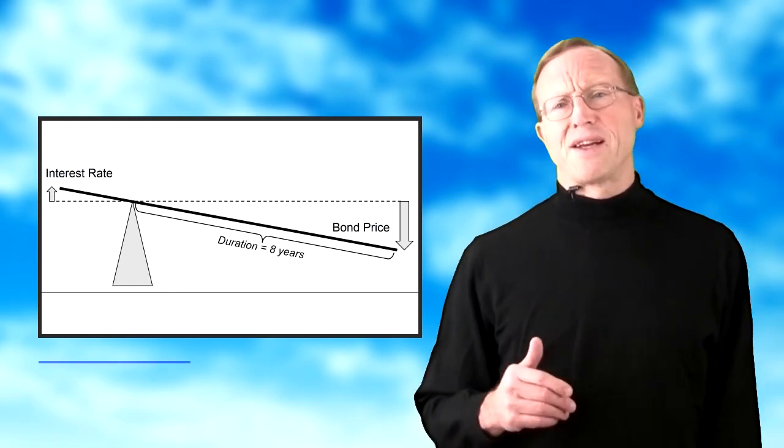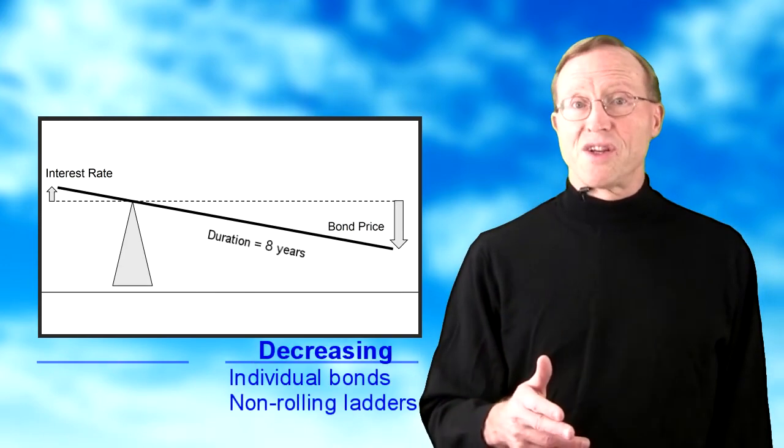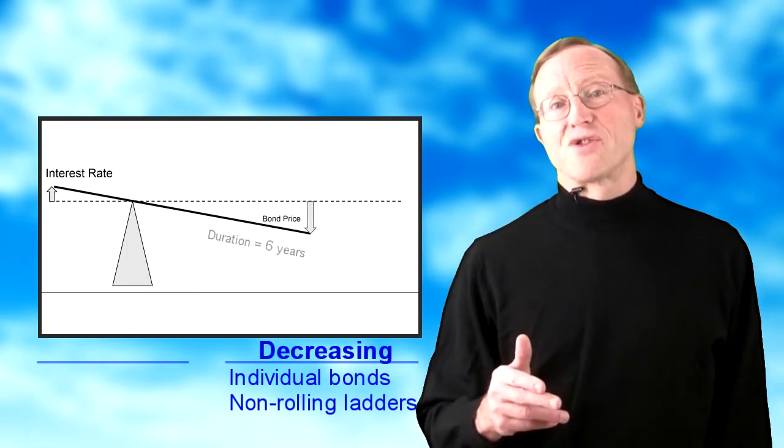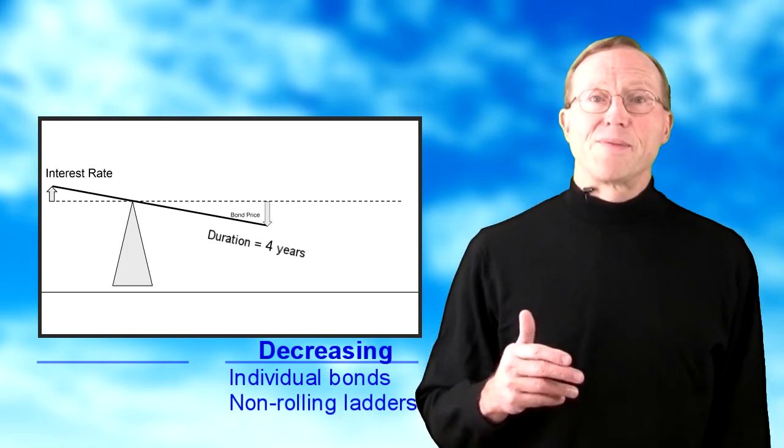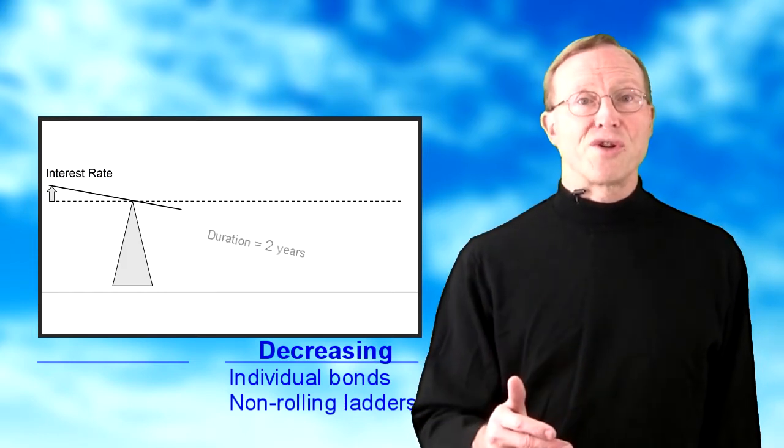A bond fund usually maintains a relatively constant duration, but both an individual bond or CD, and a non-rolling ladder, has a duration that decreases over time to zero. This means that they become less sensitive to interest rate changes as they approach maturity.